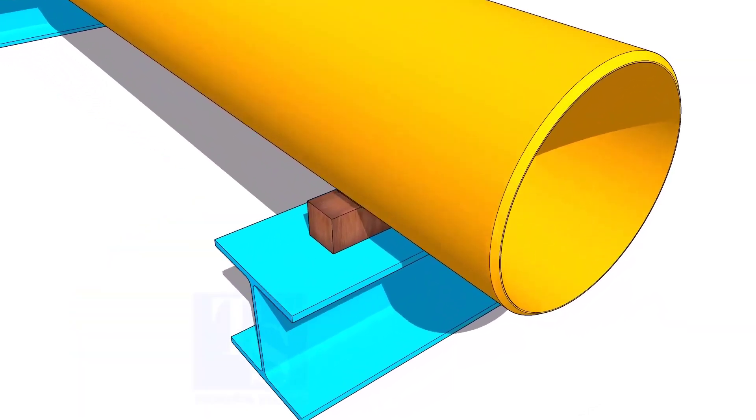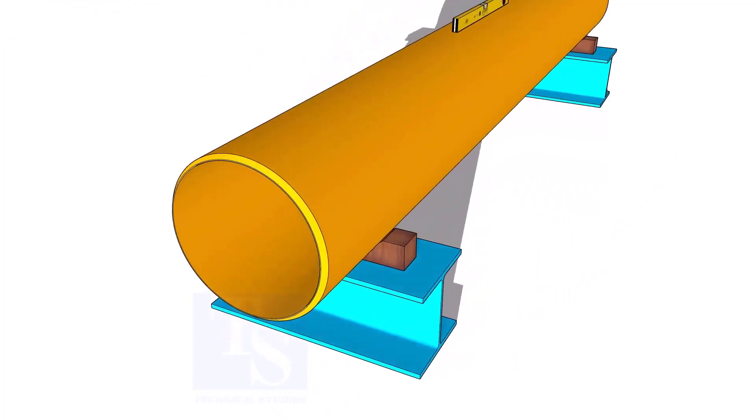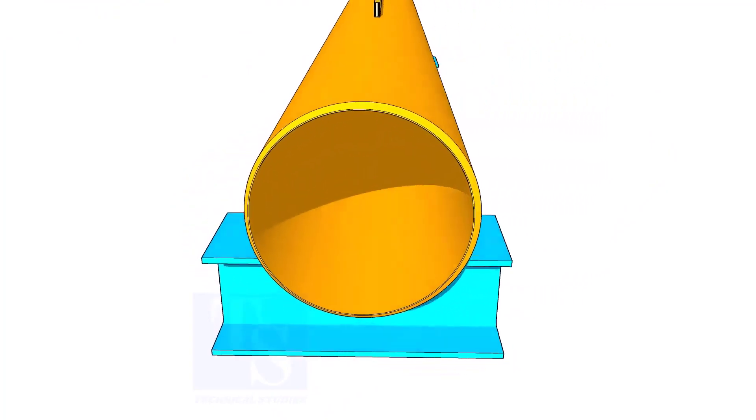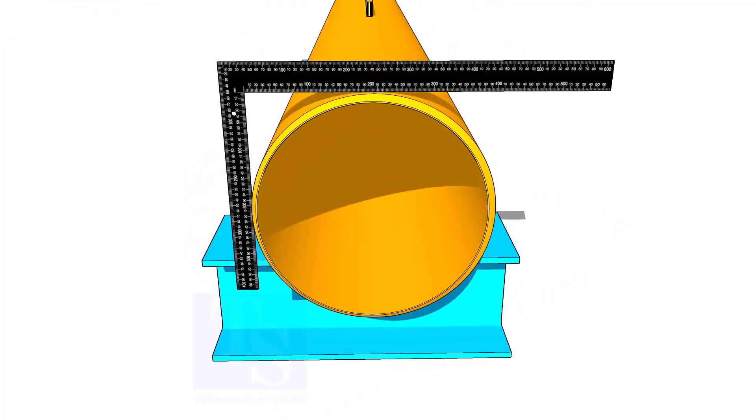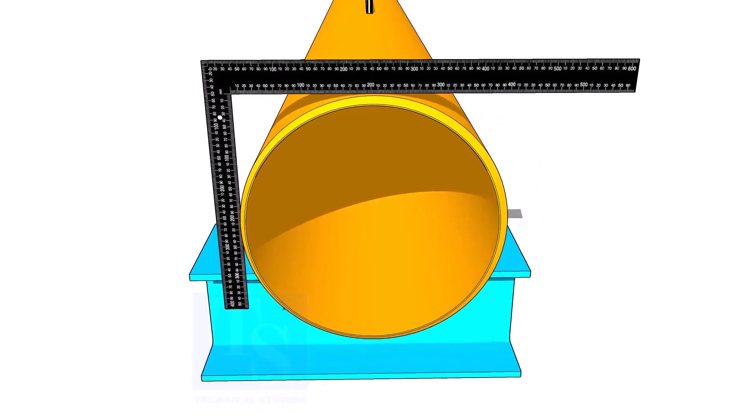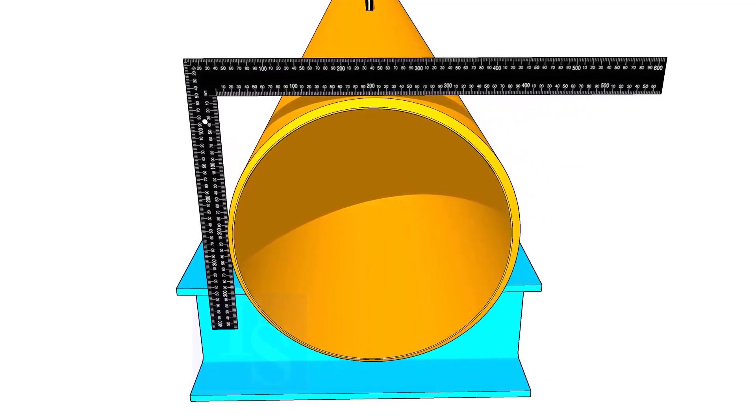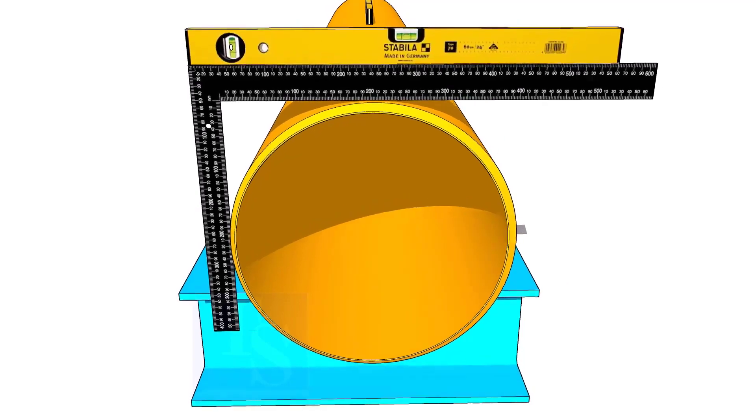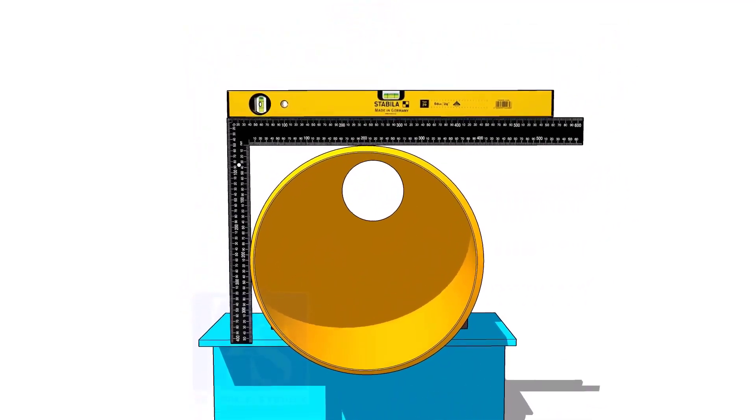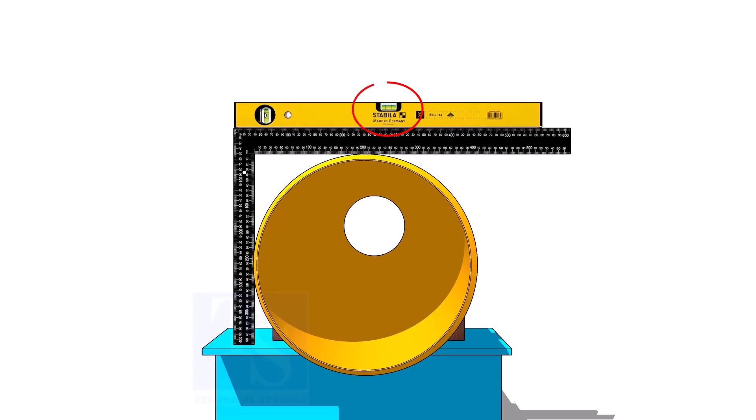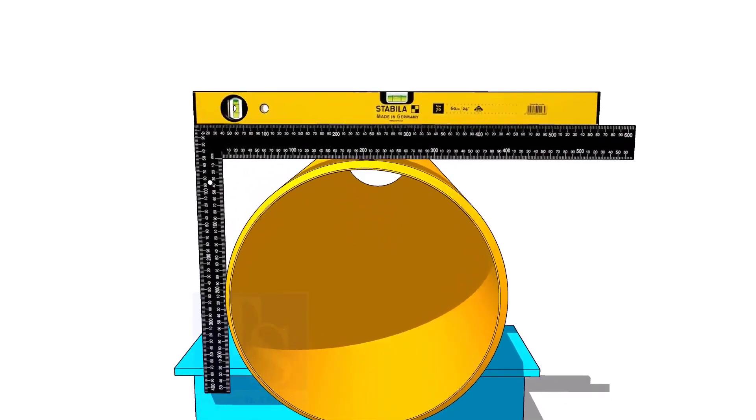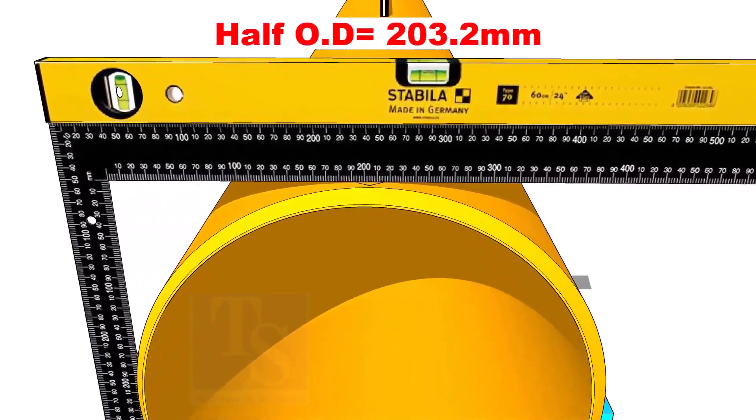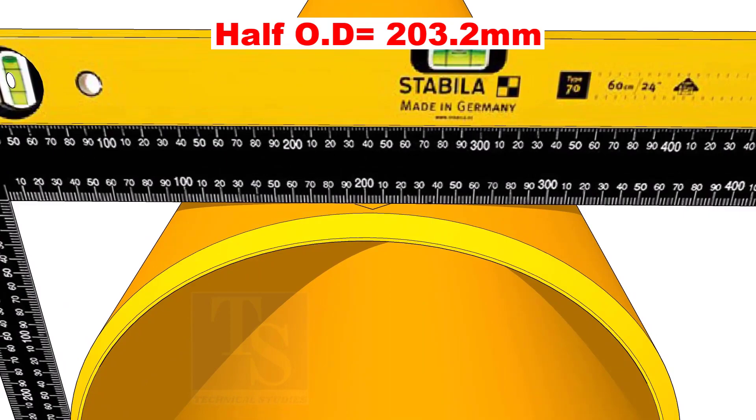Level the pipe and put packing. Put a right angle and a level bottle on the pipe as shown. Make the right angle top face level. Mark the half OD on the top of the pipe. Don't forget to cross-check from the opposite side.